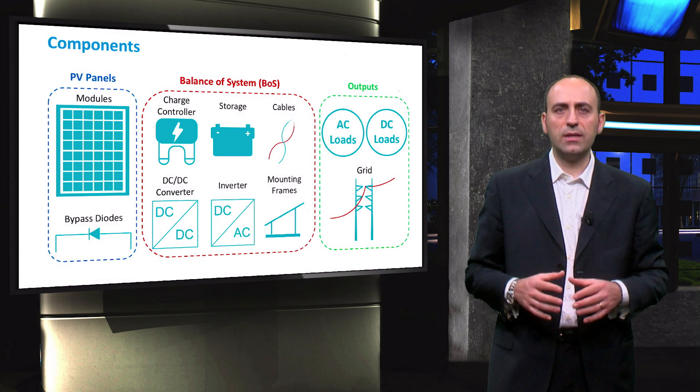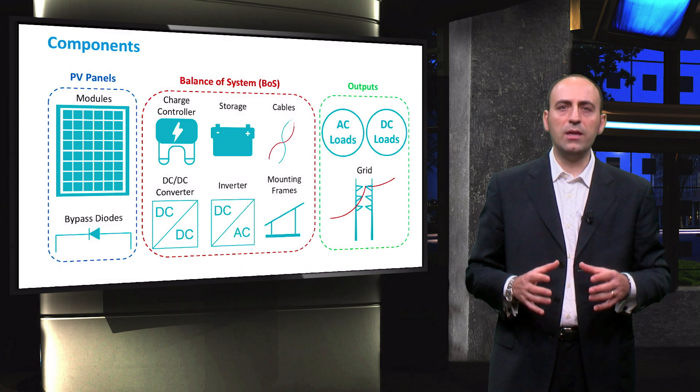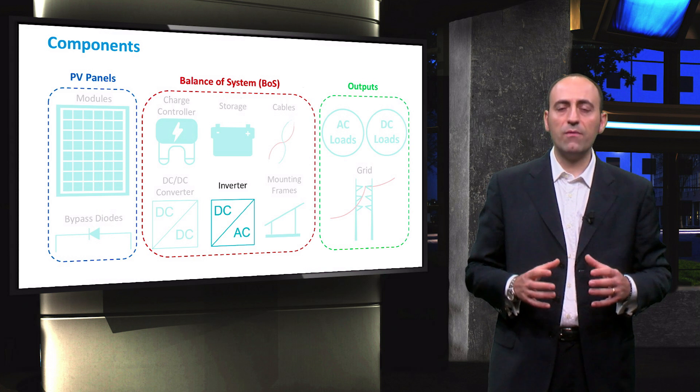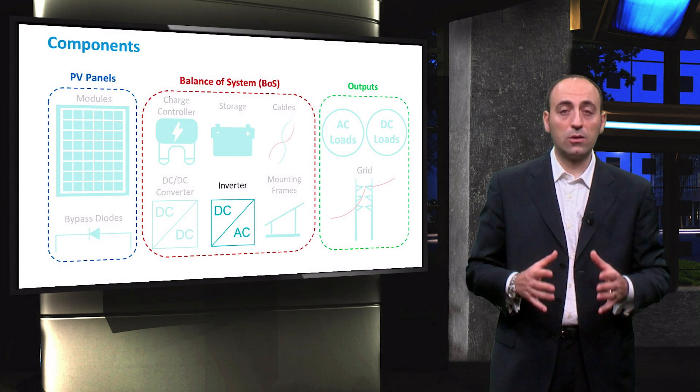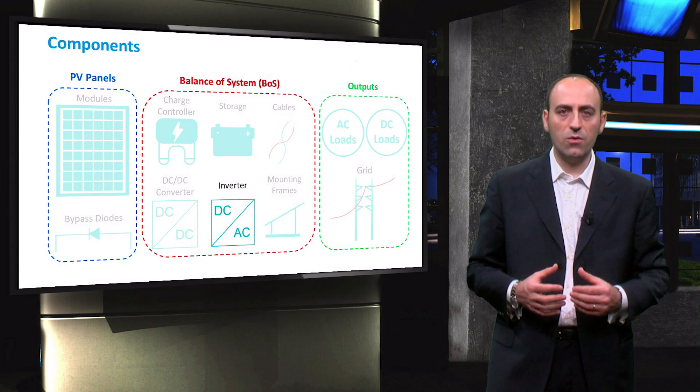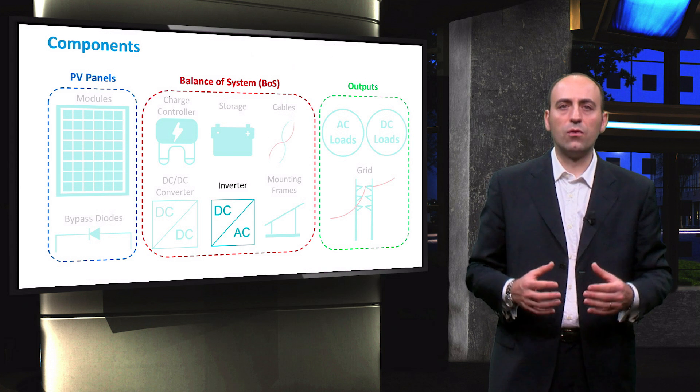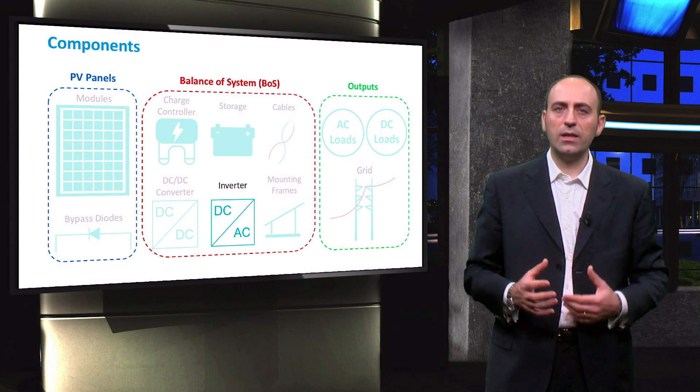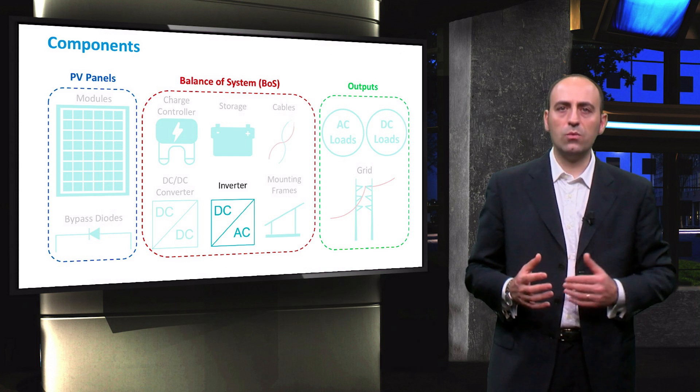Coming back to this slide that summarizes the most important components forming a PV system, we can find the inverter again in the balance of the system block. It is very important to note that the term inverter can have two different meanings. First, it is used for the actual inverter, which is the electronic device that performs the DC to AC conversion, as we are going to see. Secondly, the term inverter is also used for the total unit produced by manufacturers. And thus, depending on the application, it may contain a maximum power point tracker, a DC to DC converter, and a DC to AC inverter.